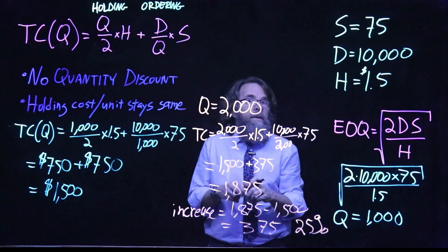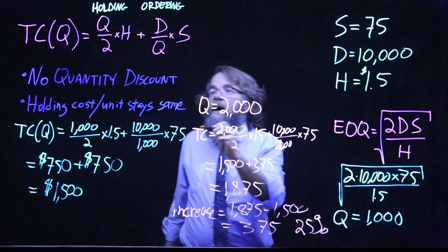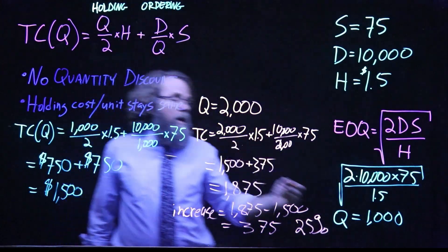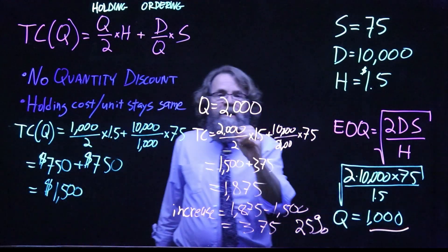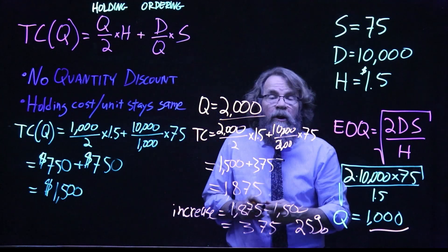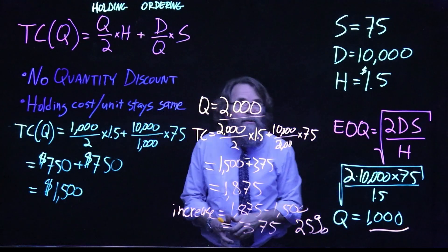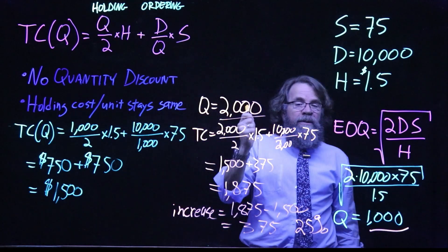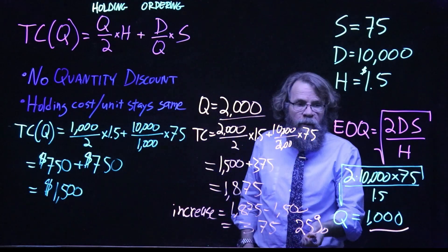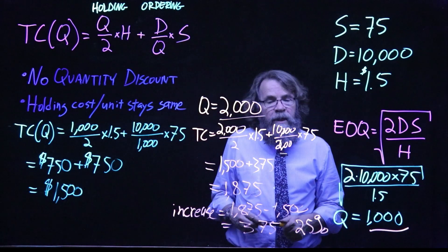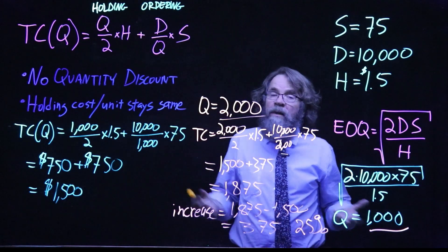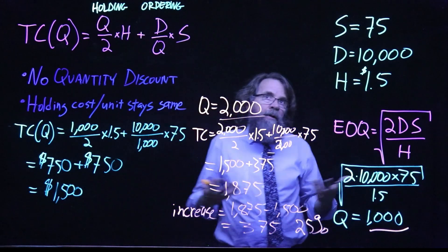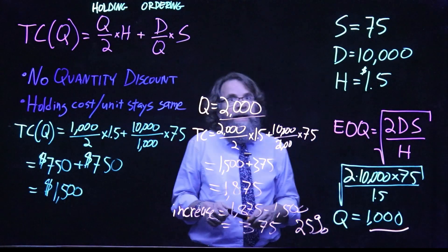So think about this, we were supposed to buy 1,000 units at a time. And instead, we bought 100% too much, we bought twice as much as we're supposed to. So we increased our order size by 100%, and it only increased our ordering and holding costs by a total of 25%. So the EOQ is very forgiving and understanding in that way.